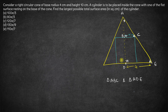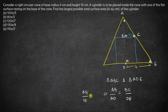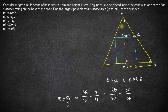Hence, these two triangles are similar triangles. Now, if they are similar triangles, we can say that AB upon AD is going to be equal to BC upon DE. AB upon AD is going to be equal to BC upon DE. AB we don't know. AD is the height of the cylinder which is 10, equal to BC which is the radius of the cylinder R, upon DE which is the radius of the cone.